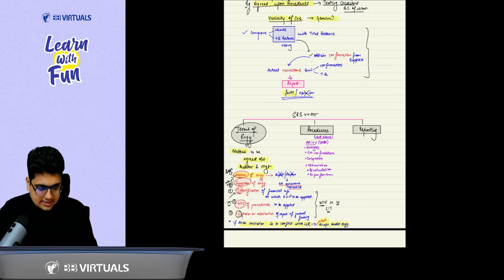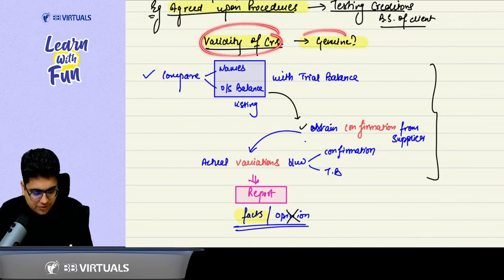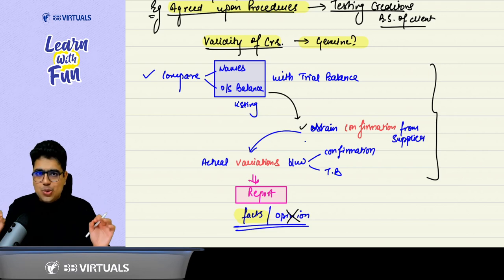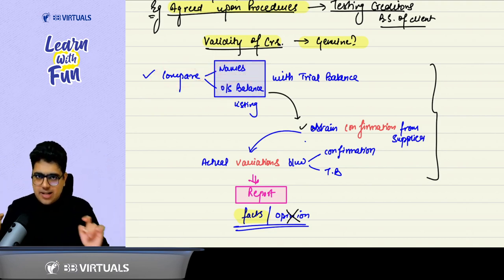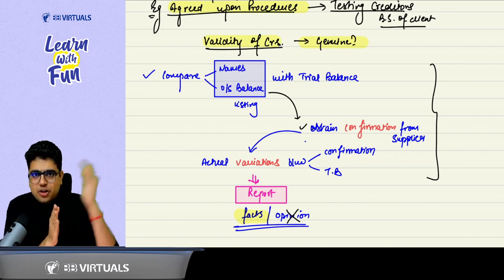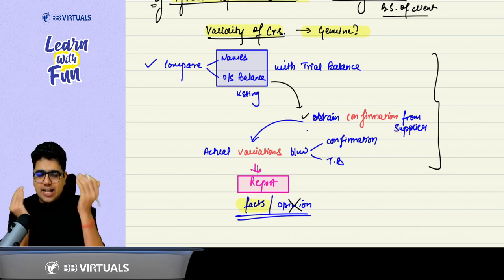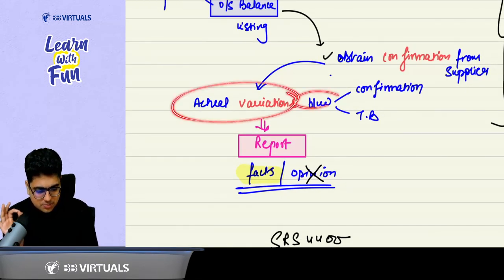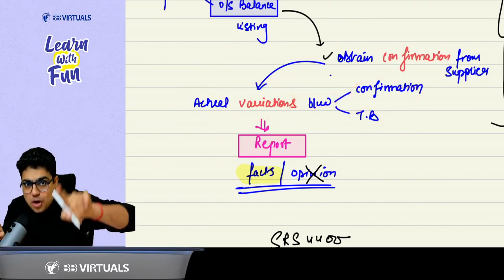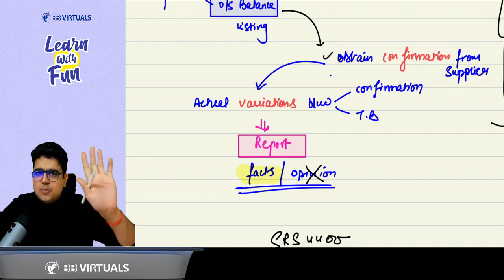Users will draw their own conclusions based on your facts. Now, we discussed one example of agreed upon procedures which are performed to check the validity of creditors, whether the creditors are genuine or not. So what you have to do? Just take a listing of the creditors, match it with the trial balance. Compare the names and outstanding balance of the creditors with the names and outstanding balance given in the trial balance. Now, for these creditors, take the confirmations. Obtain the confirmations from all the suppliers. Now, whatever confirmation you get, compare with the trial balance. Wherever are the variations, report them. Wherever are the actual variations between the confirmation and trial balance, report these facts. Do we have to form the opinion? No. Users will draw their own conclusion.